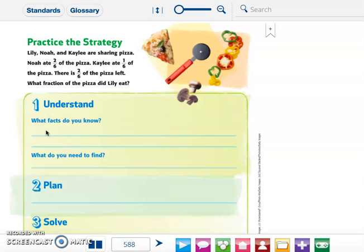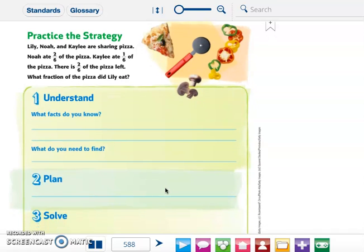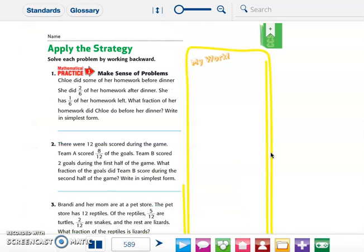Remember here you pull out what pieces of information you need from the problem. You basically restate the question, and then what operation you're going to use, and what strategies you're going to use to solve, and then show your work here, and then explain why your answer makes sense. I'm going to show you how to do it when they only give you this much workspace.